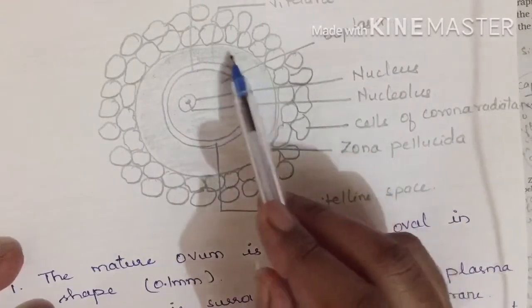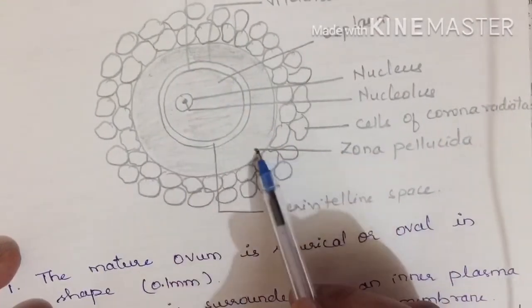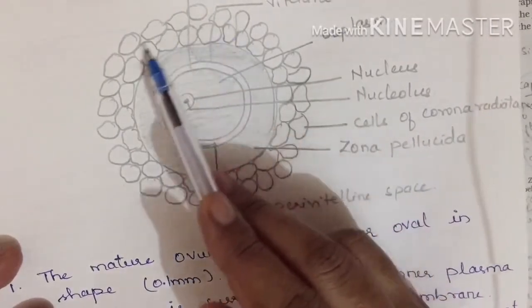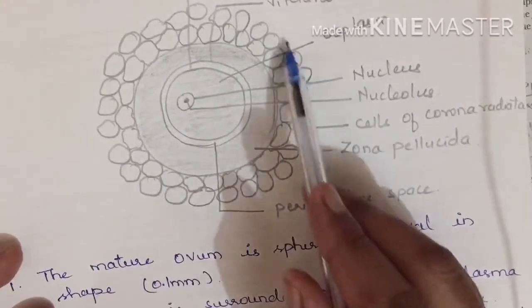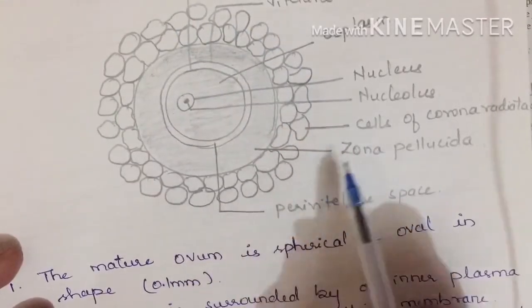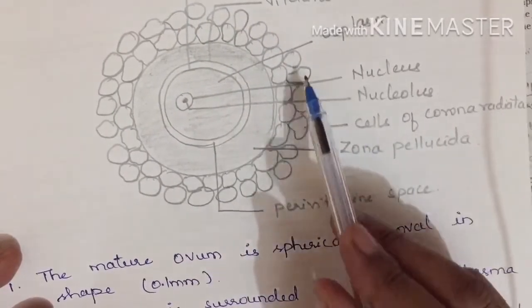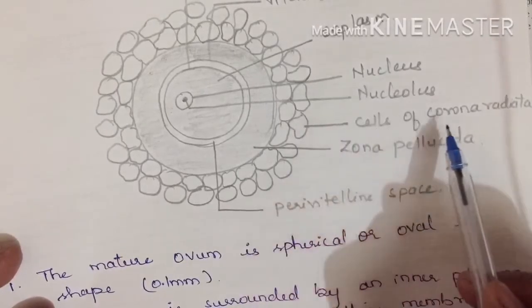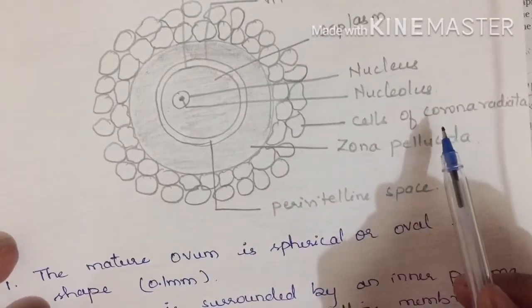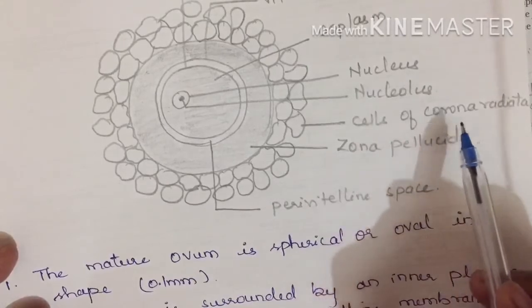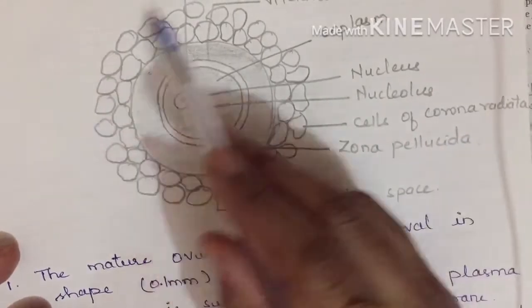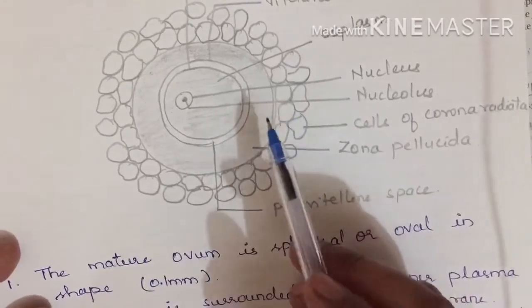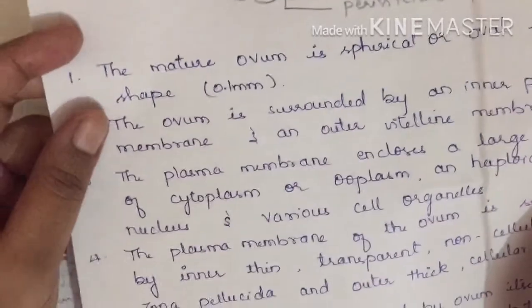There will be a presence of a thin, transparent layer called zona pellucida surrounding the vitelline membrane. Outside that, there will be a presence of cells arranged in a layer called corona radiata. The layer itself is called corona radiata and the cells of it are called cells of the corona radiata.